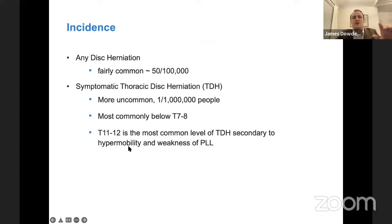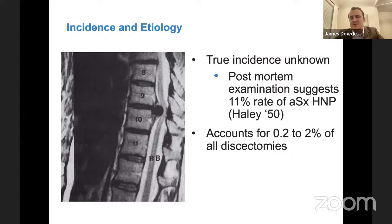Now getting into thoracic disc herniation — it's fairly uncommon. Disc herniation by itself, cervical, thoracic, lumbar, is fairly common: 50 to 100,000 people will have that. Symptomatic thoracic disc herniation is very uncommon, about one in a million people. Most commonly it's below T7-T8, and even more so at T11-12, because of hypermobility and weakness of the PLL — you have more motion at the junctional levels. The true incidence is actually unknown. Post-mortem examination from a study in the 1950s shows an 11% rate of asymptomatic thoracic disc herniation, but truly symptomatic around one in a million — pretty rare.